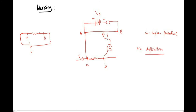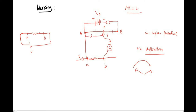When I initially touch the jockey to the wire, the galvanometer shows deflection in one direction; at another point it shows deflection in the opposite direction. So somewhere between these two points there is a null point. Let us say at point P I get the null point — where no current flows through the galvanometer. Let the total length of the potentiometer wire be L, and the null point length be l.